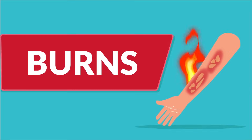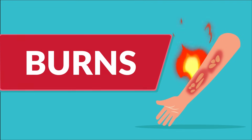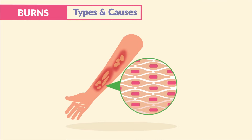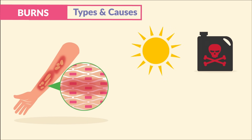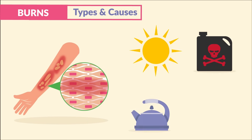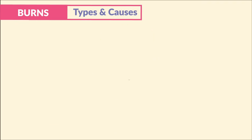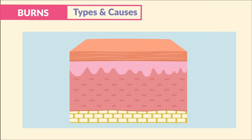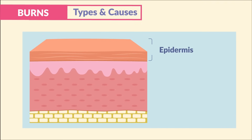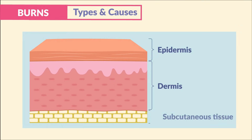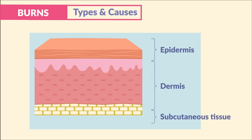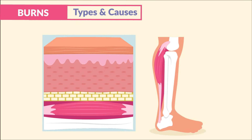Our next topic is burns. Burns are injuries caused by direct tissue damage from exposure to either the sun, chemicals, thermal sources like boiling liquids, and even electricity. The skin is made of three layers: the epidermis, the dermis, and the subcutaneous tissue — that fatty, bubbly-looking tissue. After the layers of skin, we find fascia, muscle, and then bone.